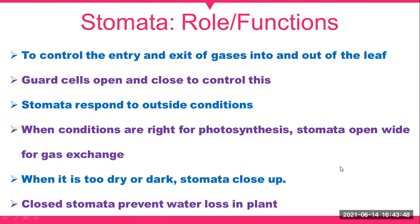All functions of stomata control the entry and exit of gases into or out of the leaf. Guard cells open and close to control this. Stomata respond to outside conditions — when conditions are right for photosynthesis, stomata open for gas exchange. When it is too dry or dark, stomata close up, preventing water loss in the plant.